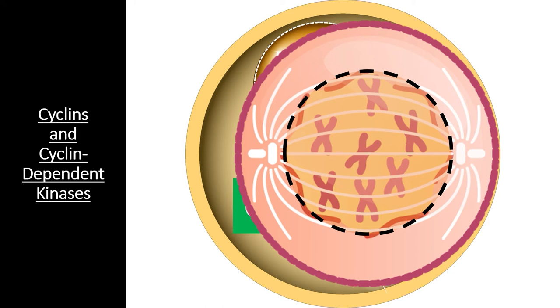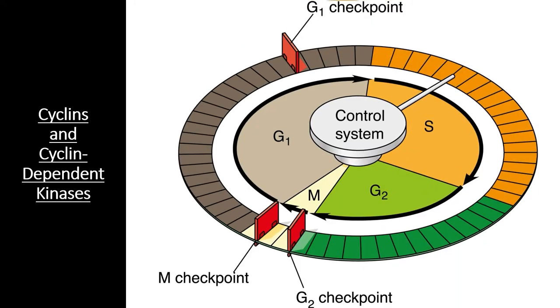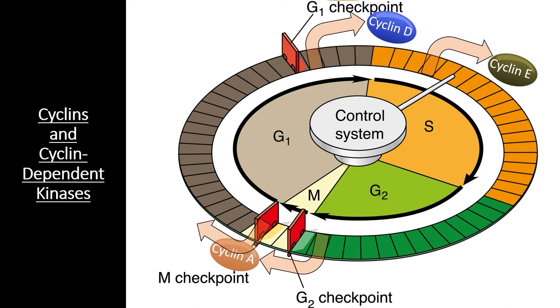While it is not necessary to memorize every cyclin, cyclin-dependent kinase, and signal transduction pathway that regulates the cell cycle for the AP Biology test, you do need to understand that there are many different cyclins and CDKs that regulate different parts of the cell cycle. Each cyclin is released by a different cell cycle checkpoint, and each cyclin activates a specific CDK that, in turn, activates a number of cellular responses that are specific to that part of the cell cycle.